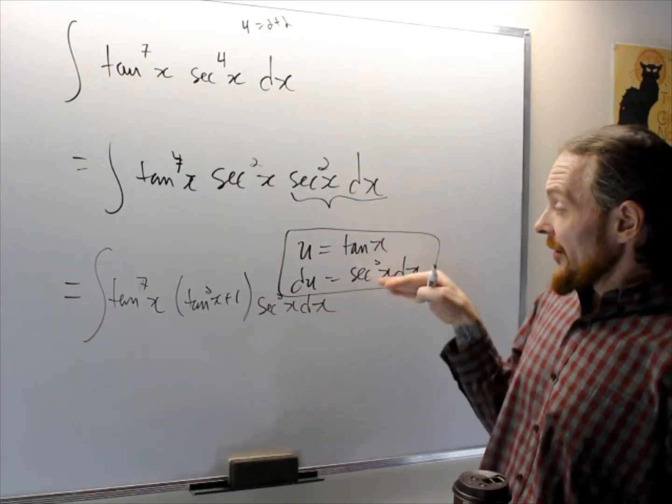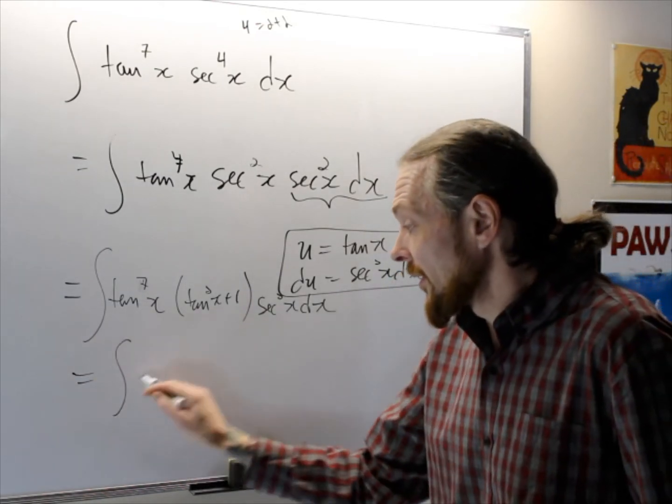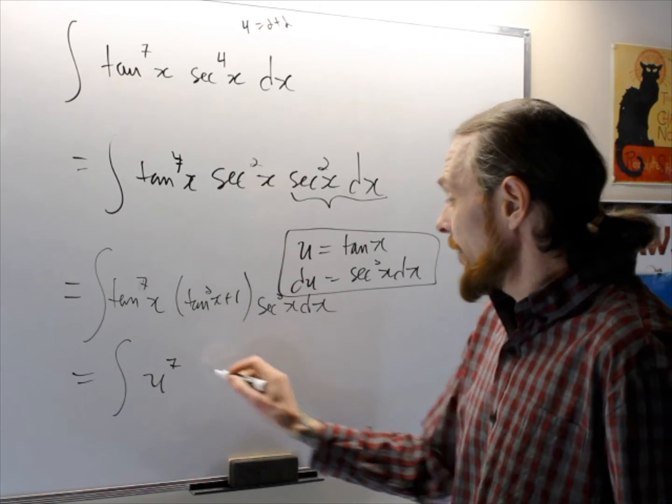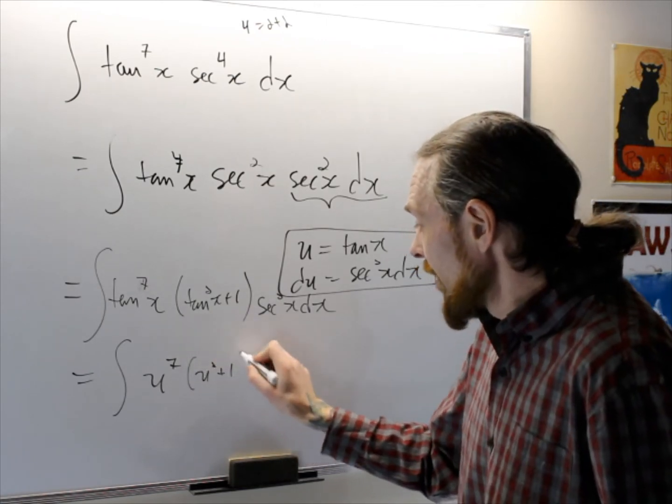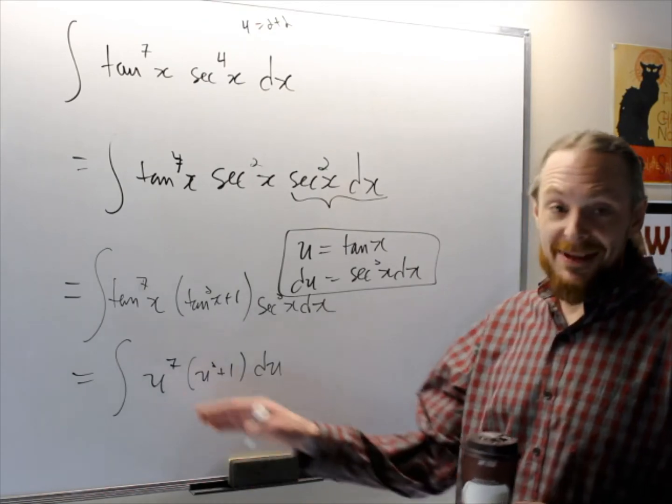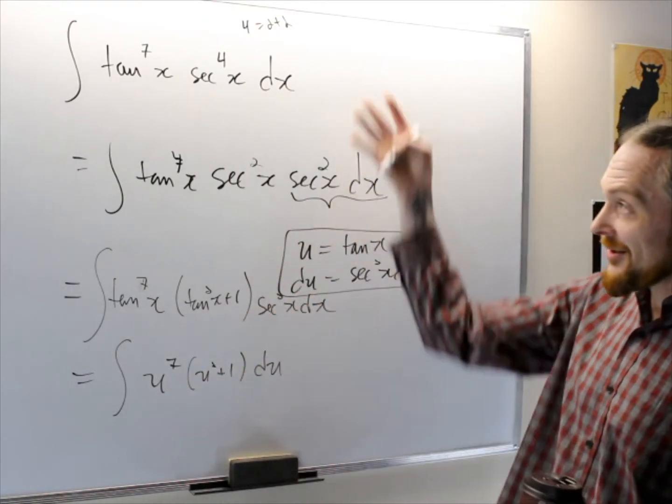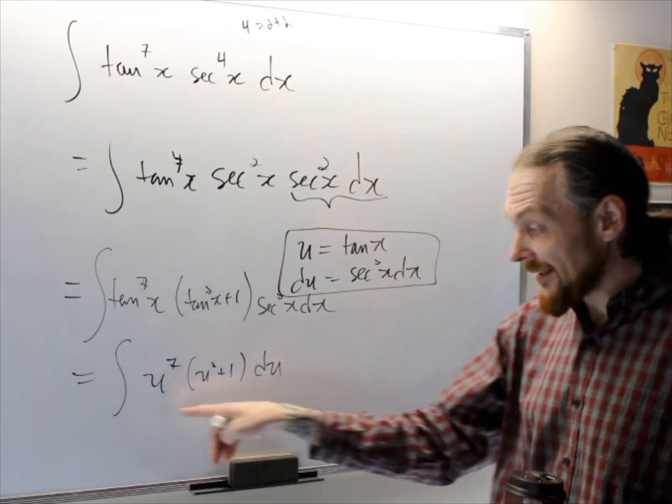We can get rid of the tans and all the x's using u's. This equals the integral of u to the seven times u squared plus one du. Now that we have this, the idea of the substitution, of course as always for substitution rule, is using the trigonometric identities and a clever idea.